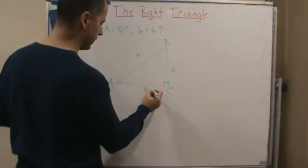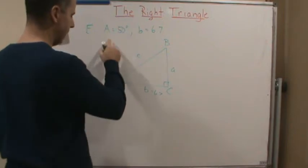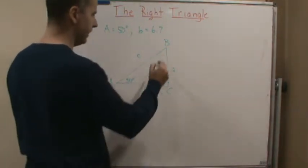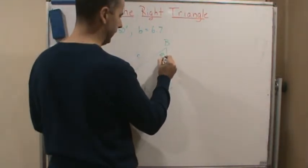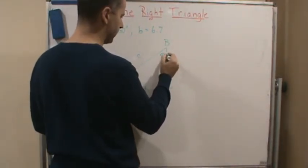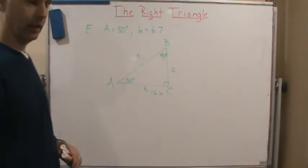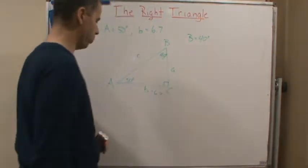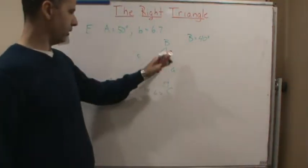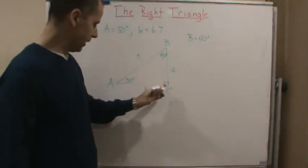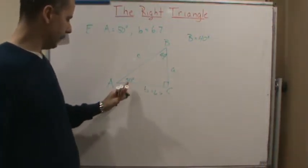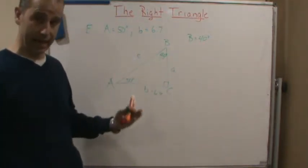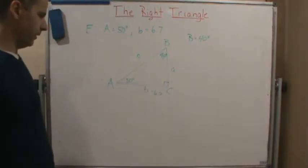They give us B is equal to 6.7, and angle A is 50 degrees. Well, right away, we know that this angle here, angle B, has to be 40 degrees, right, because they're complementary. That's easy, right? So B equals 40 degrees. Why? Because the interior angles have to add up to 180, since this is a right triangle, this is 90, and then if this is 50, these have to be complementary, which means they have to add up to 90 degrees. So that's 50 and 40.